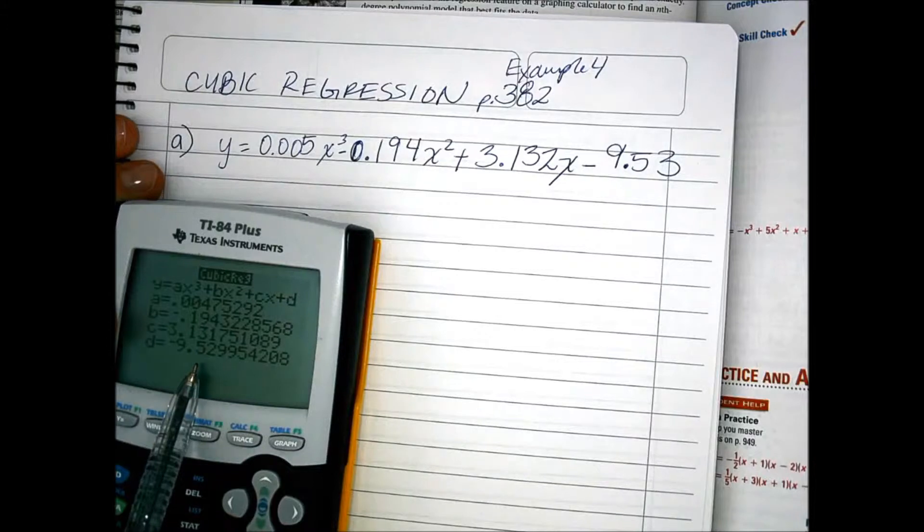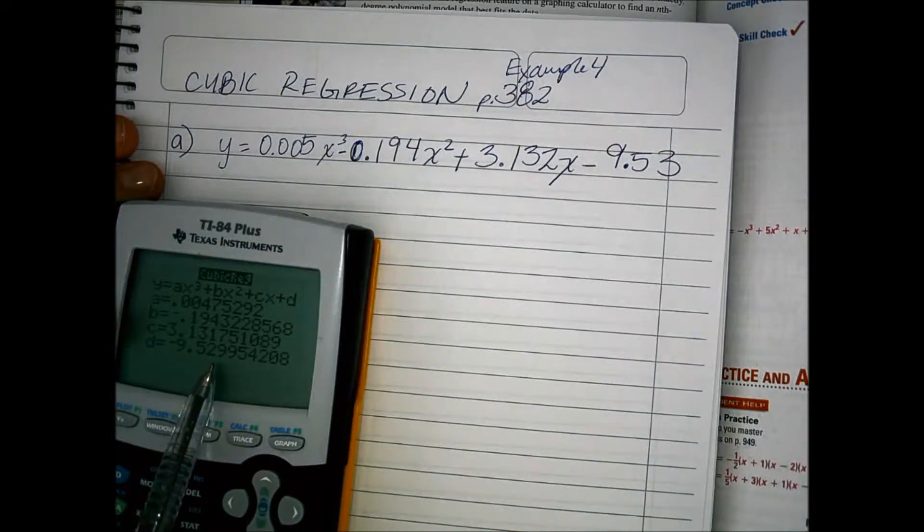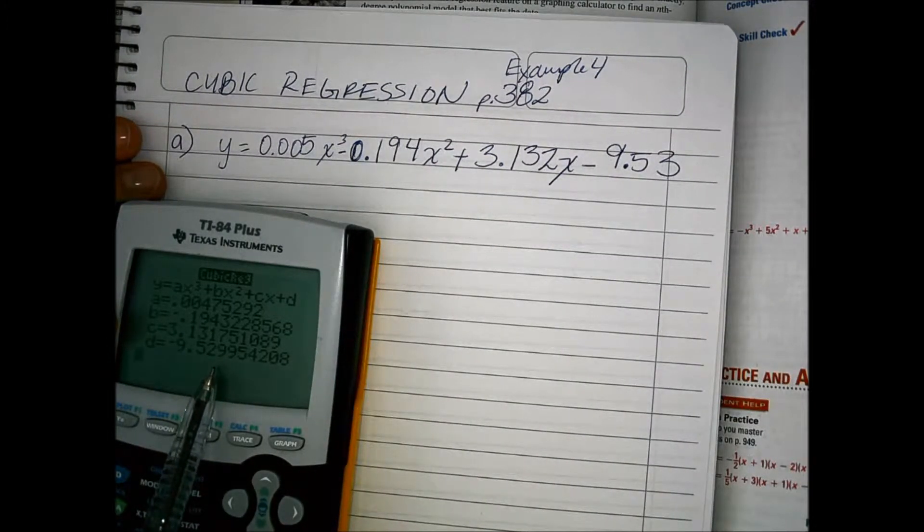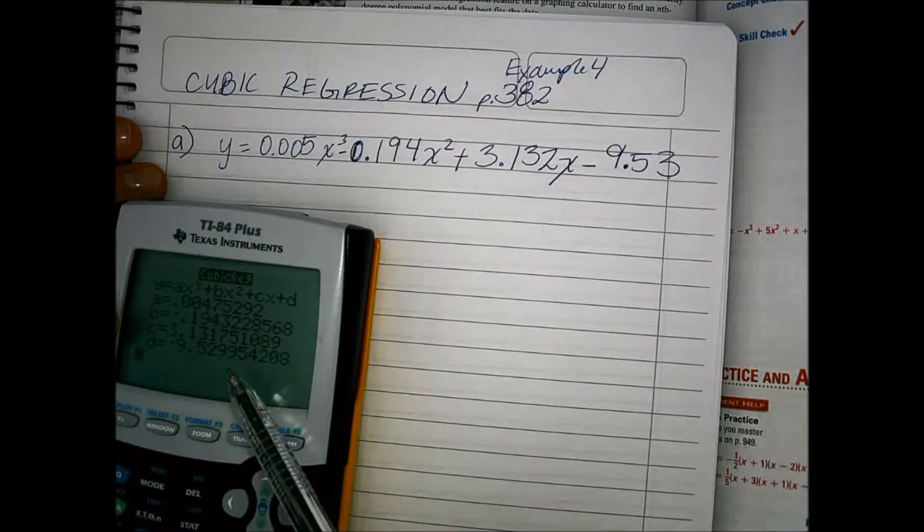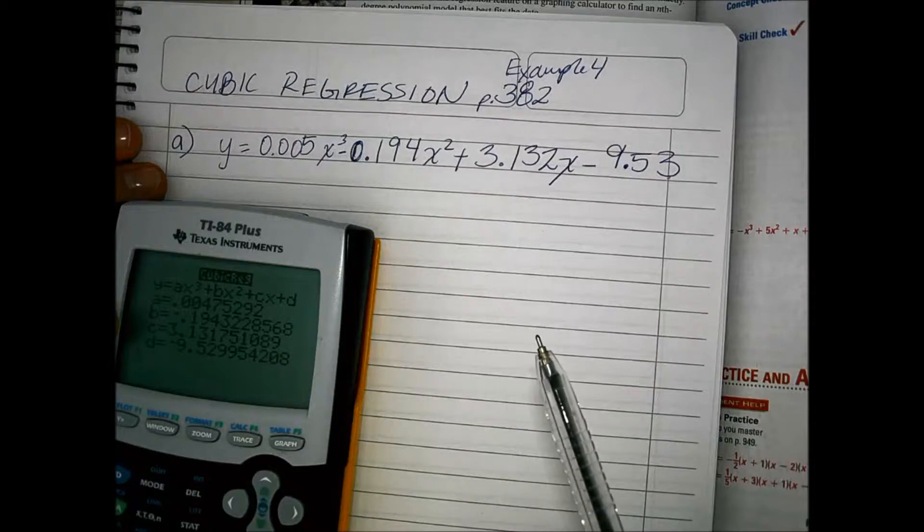Since this was 2.99, then it makes more sense to have the 3 instead of the 2.99 in order for it to be in the thousandths place.